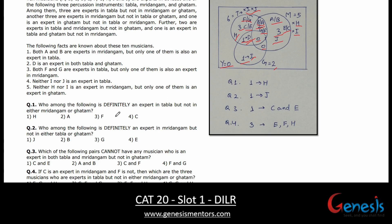Question 1: Who is definitely an expert in Tabla but not in either M or G? Looking at only-T: H is definitely there. F or G (one of them) and one of C or E are also there, but not fixed. So the definite answer is H. Question 2: Who is definitely an expert in M but not in either Tabla or G? In only-M, J is definitely there. So the correct answer is J.